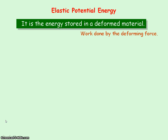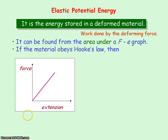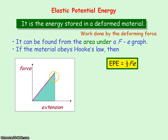Elastic potential energy is the energy stored in a deformed material — a material that has changed shape — so it is the work done by a deforming force that either stretches or compresses a material. It is found from the area under a force-extension graph. If the material obeys Hooke's law, the graph is a straight line through the origin, so the area is a triangle: a half times the base (extension) times the height (force). Therefore the elastic potential energy, also known as elastic strain energy, equals ½Fe.